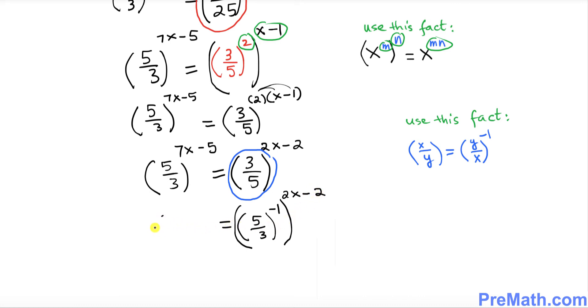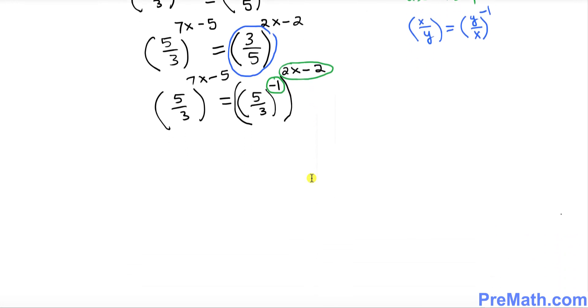So far so good, and on the left side we still have 5 over 3 to the 7x minus 5. Once again we have two exponents. Do you see that? One exponent and another one. We're going to use this fact once again to multiply them out.